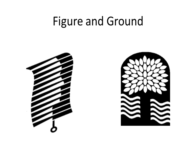The eye differentiates an object from its surrounding area. A form, silhouette, or shape is naturally perceived as figure or object, while the surrounding area is perceived as ground, background.